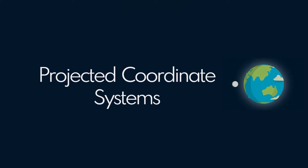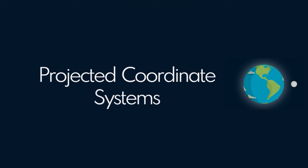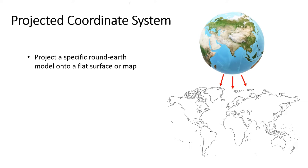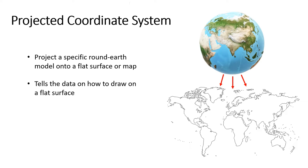Hello survey athletes. In this video we will be discussing the projected coordinate system. The projected coordinate system helps you to project a specific round earth model onto a flat surface or map. Projected coordinate systems are created by projecting the 3D geographic coordinate system onto a two-dimensional surface. The projected coordinate system tells the data on how to draw on a flat surface. There are many different map projections and each displays the earth differently.